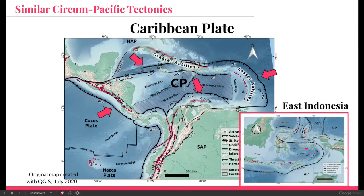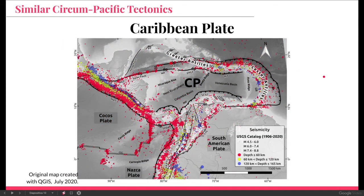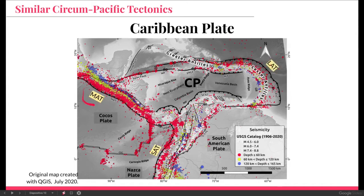In the lower right part of the slide we can see the eastern Indonesia map. Looking at the leading edge of both tectonic settings, the Caribbean Plate has the Lesser Antilles volcanic arc, and eastern Indonesia has the Banda Sea arc. The Caribbean Plate also has another arc in its trailing edge, however, in eastern Indonesia we don't have that feature — that's important to note. Looking at the seismicity of the Caribbean Plate, we can also see well-defined plate boundaries, especially subduction zones, with the Middle America Trench and the South American Trench on the western edge.